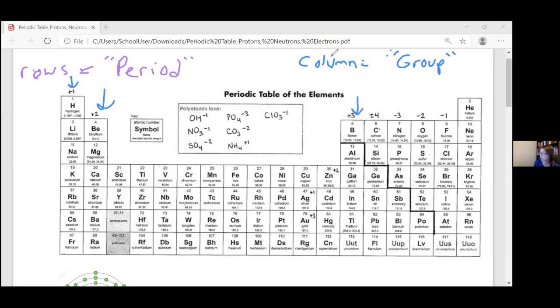And we'd say that the column with boron in it, we would call that group three, group four, group five, group six, group seven, group eight. So one, two, three, four, five, six, seven, eight. That's how we're going to label our groups.